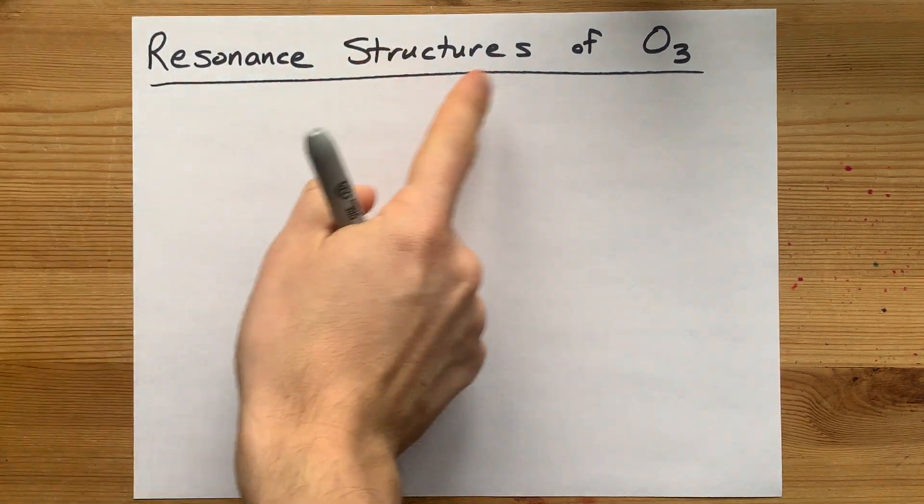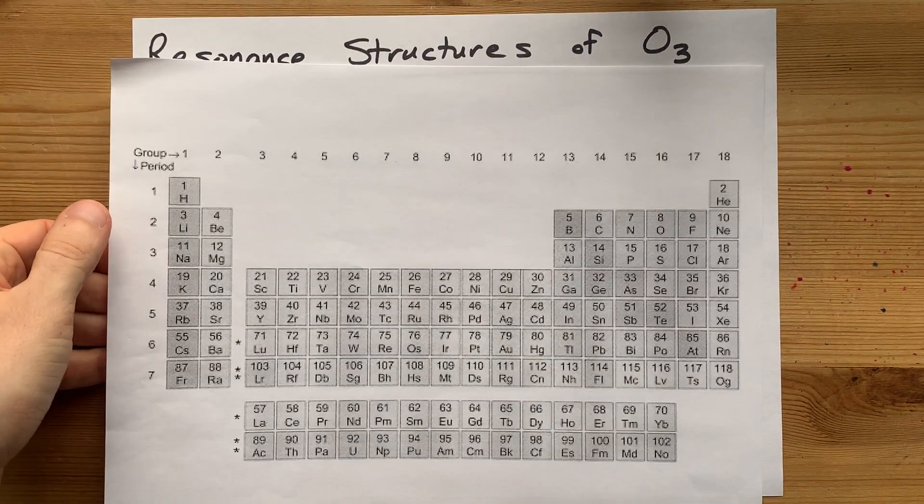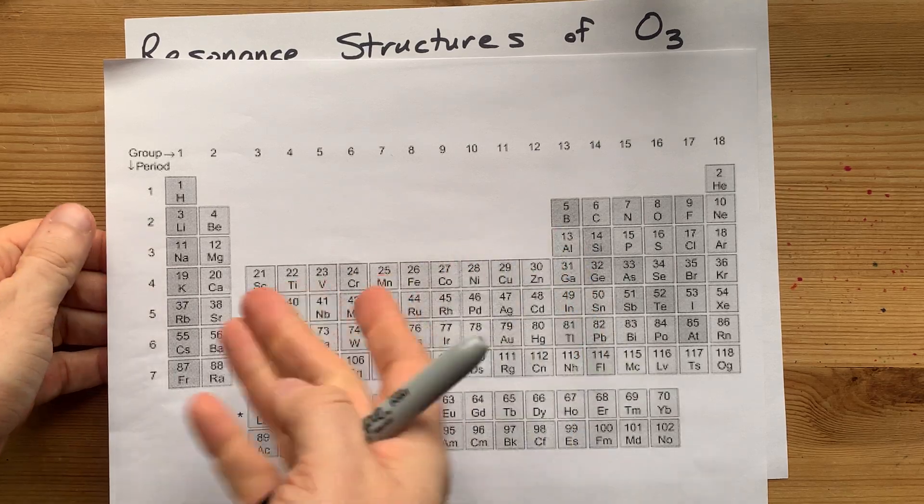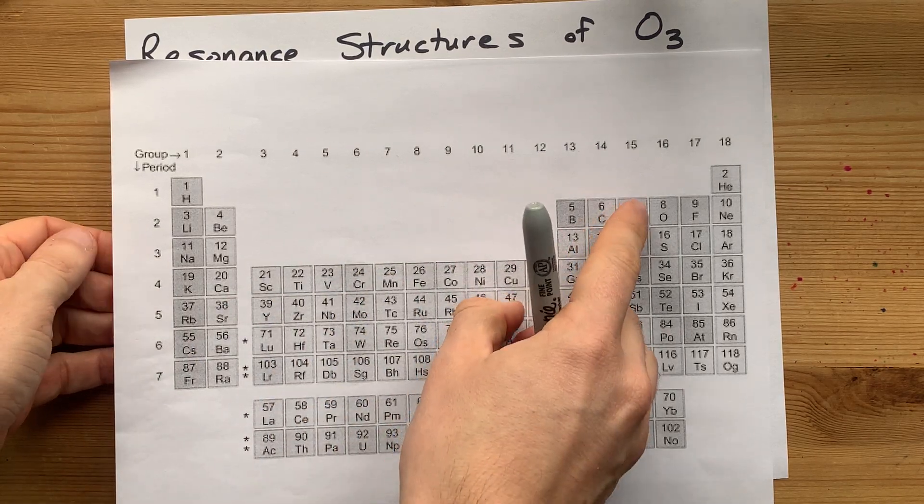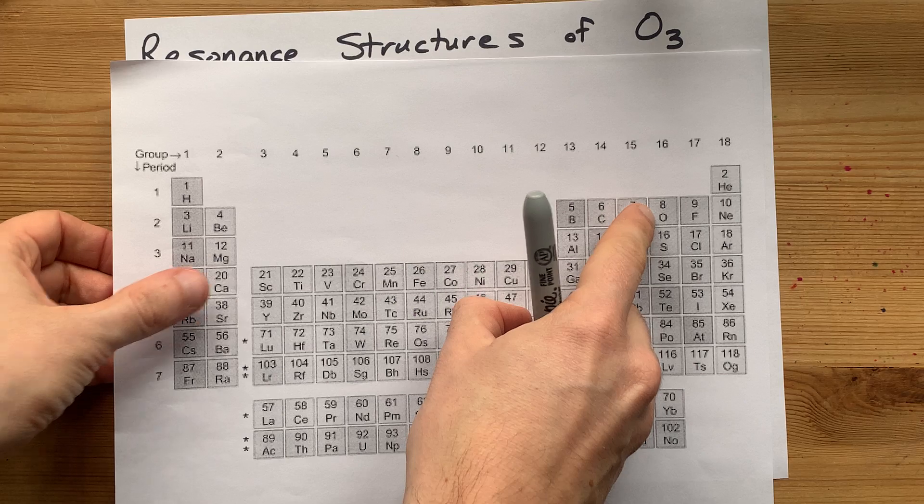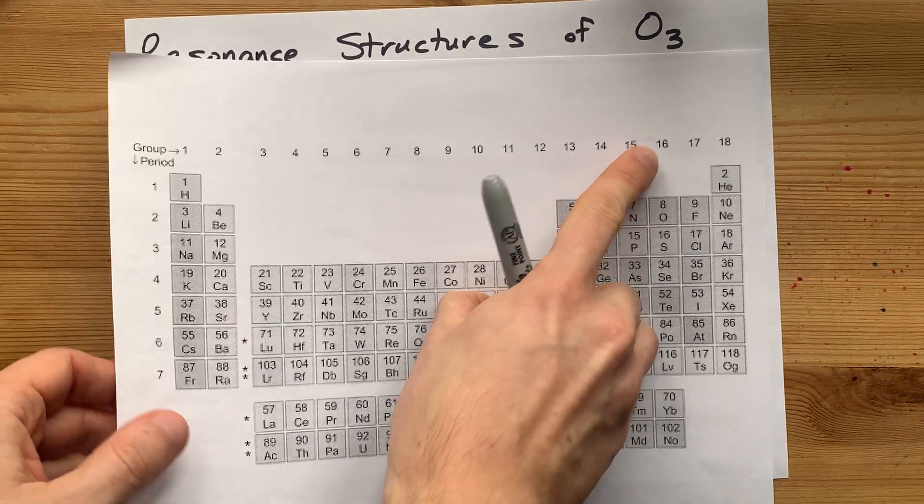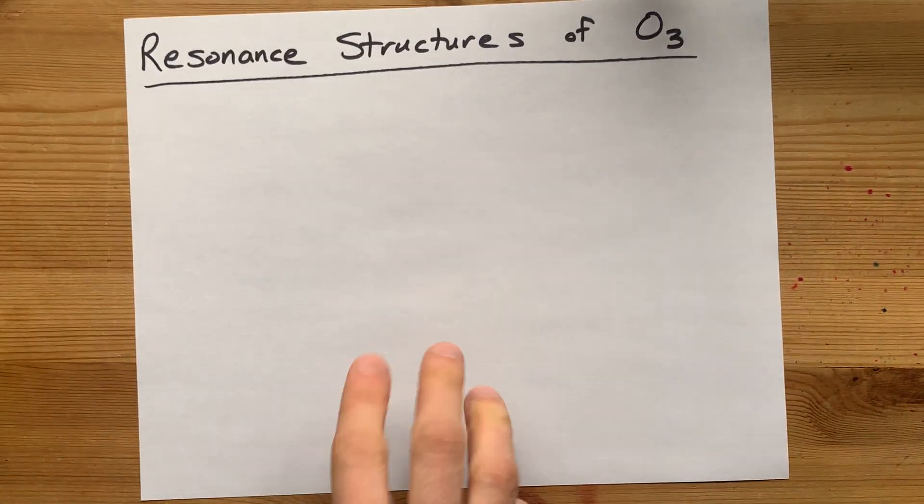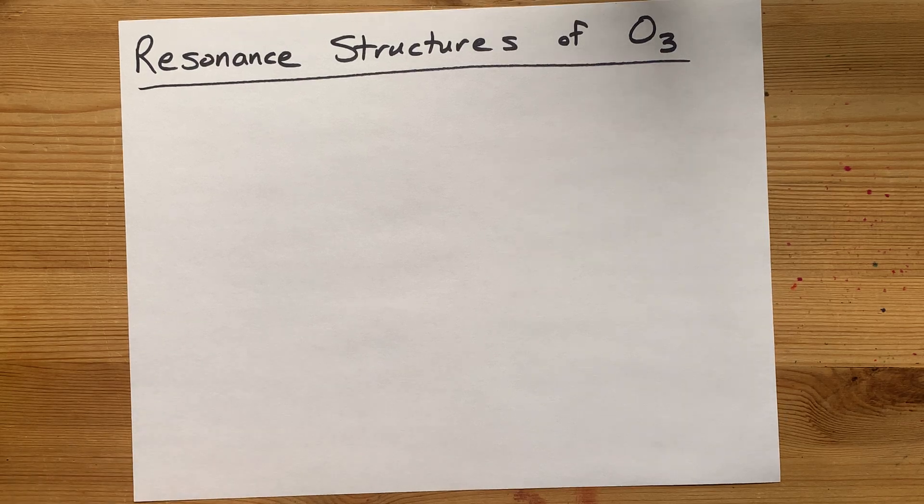To draw the resonance structures of ozone, O3, you need a Lewis structure that's valid in the first place. We have three oxygens. Each oxygen is in group 16, so it brings six valence electrons with it.